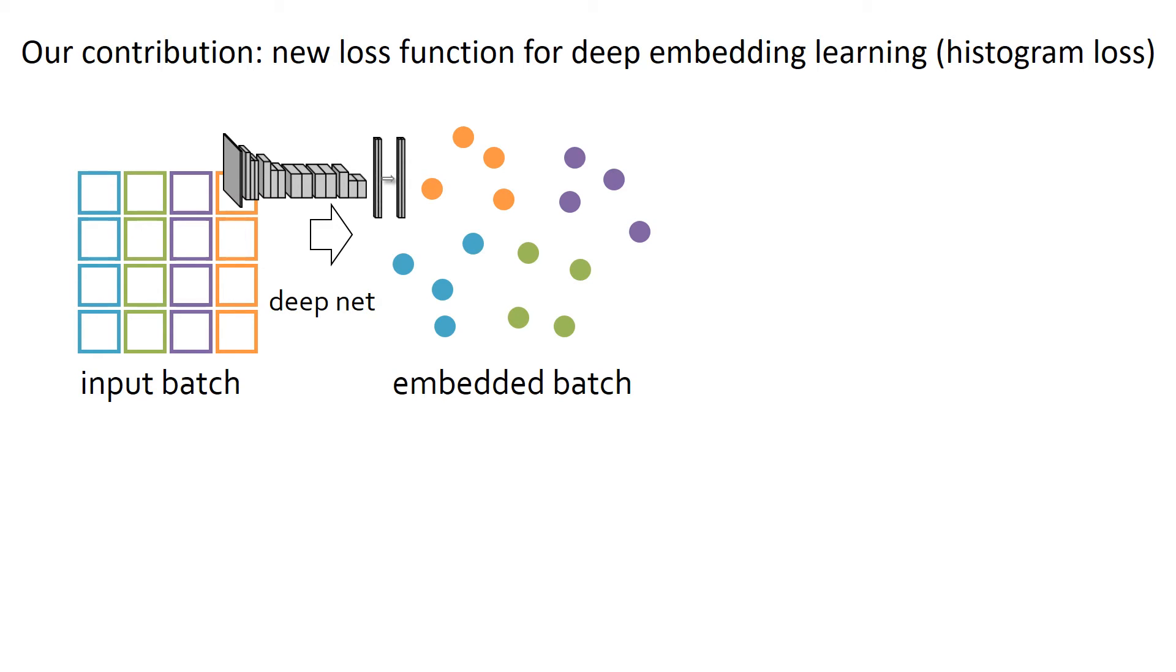Our loss considers scalar products between all positive and negative pairs within the batch. Assuming that the descriptors produced by the network are length normalized, these scalar products are distributed between minus 1 and plus 1.